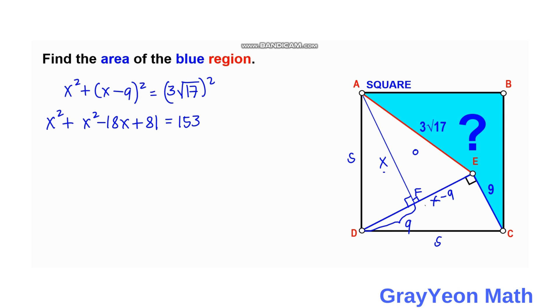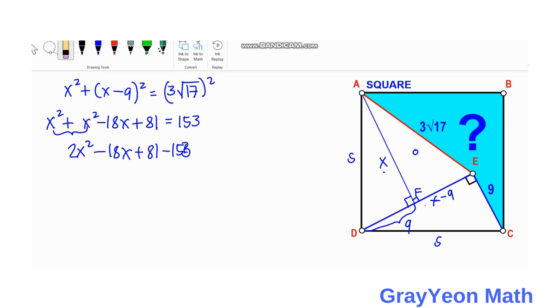So 2X squared, simply adding these two like terms, minus 18X plus 81 minus 153 is equal to 0.